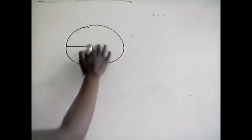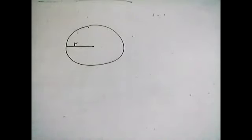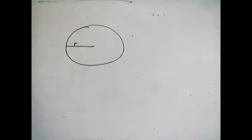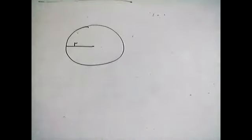First of all, we have to understand what information is given in this question. We have the radius of a circle is increasing at a rate of 2 centimeters per minute. So the radius R is increasing at a rate — that means there is a change in radius over change in time. So the information given here is about the gradient, dR over dT.